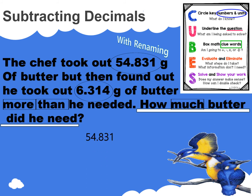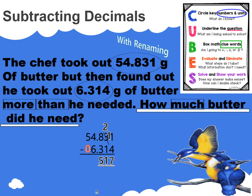Line up your digits. Now let's find the difference. Four thousandths from one thousandth cannot work. Go over to your hundredths column and rename three hundredths as two hundredths. Go back to your thousandths place — you now have eleven thousandths. Four thousandths from eleven thousandths leaves seven thousandths. One hundredth from two hundredths leaves one hundredth. Three tenths from eight tenths leaves five tenths. Place your decimal point.